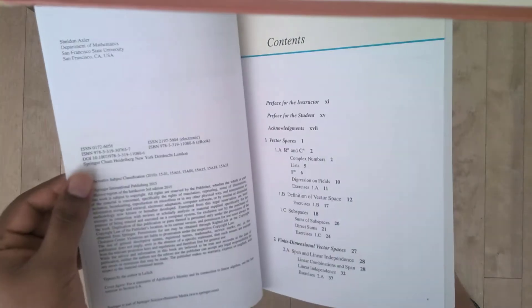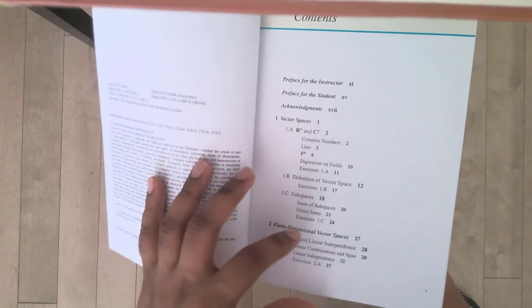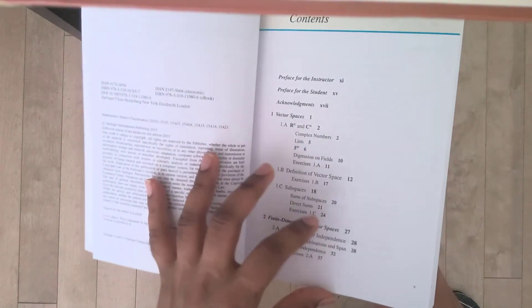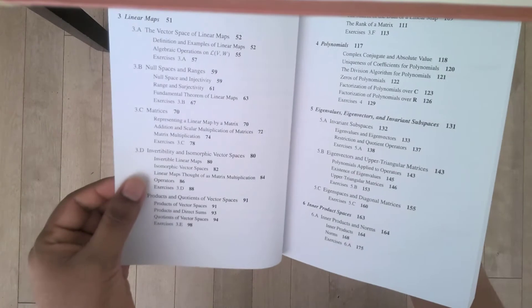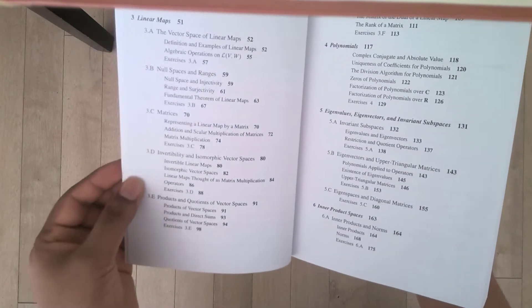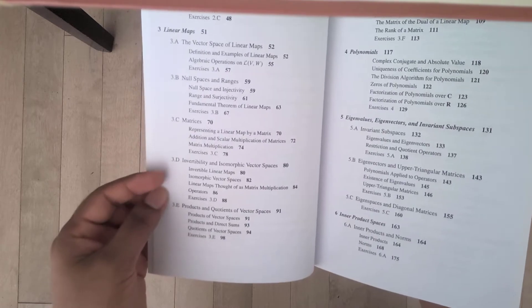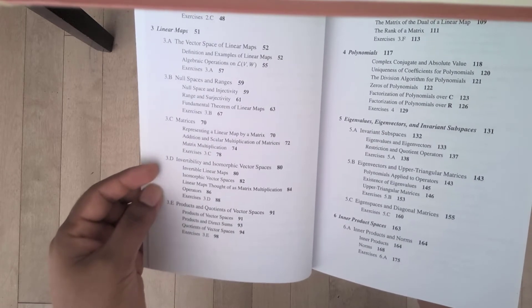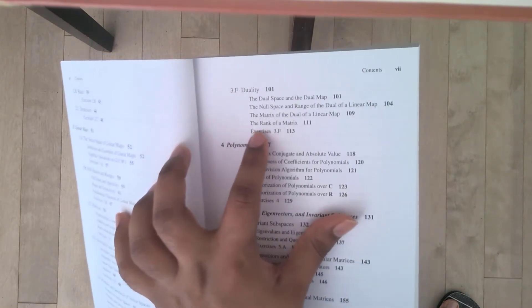What else do I like about it? Well, the coverage of the book itself is very far. It goes into finite dimensional vector spaces, span, linear independence, and so on. And it has a pretty big chapter on linear maps, up to products and quotients of vector spaces.